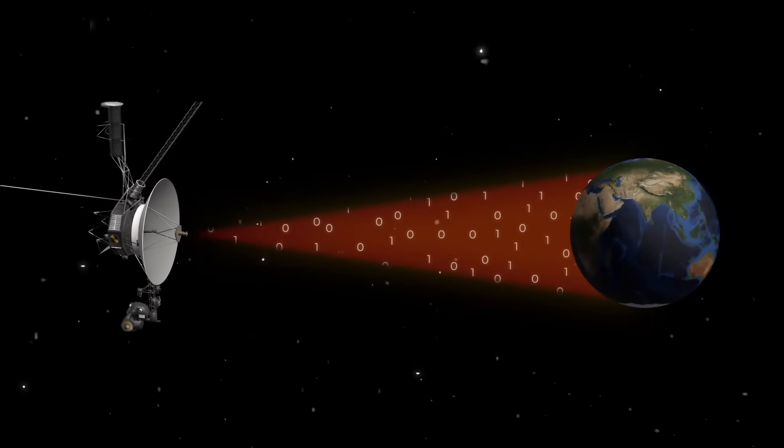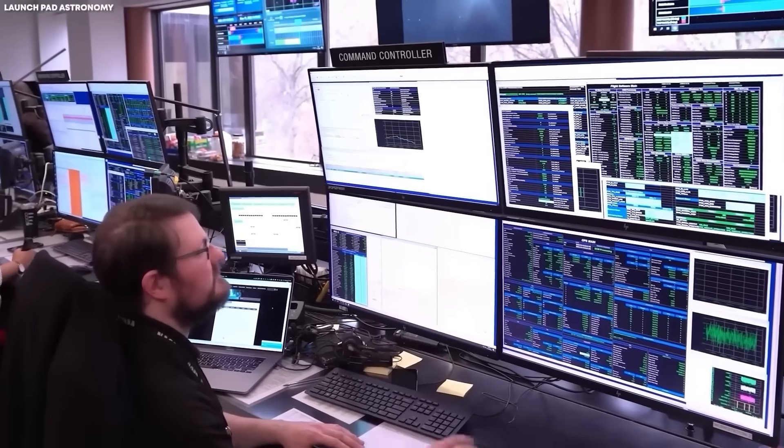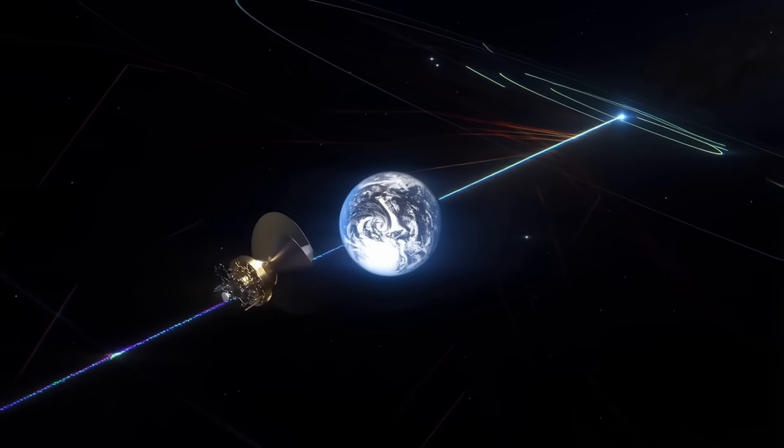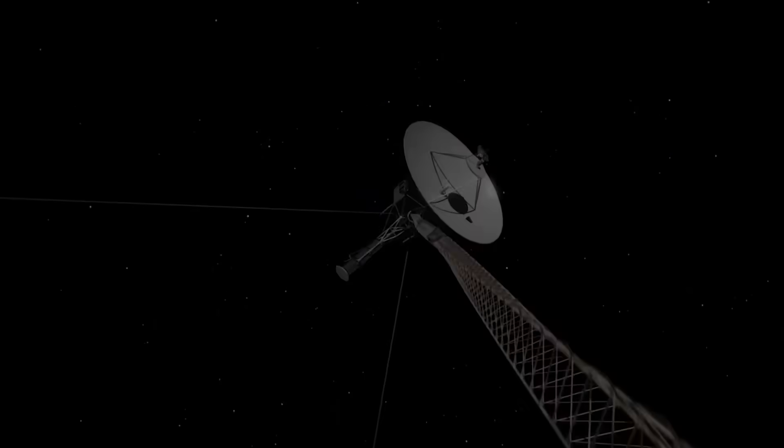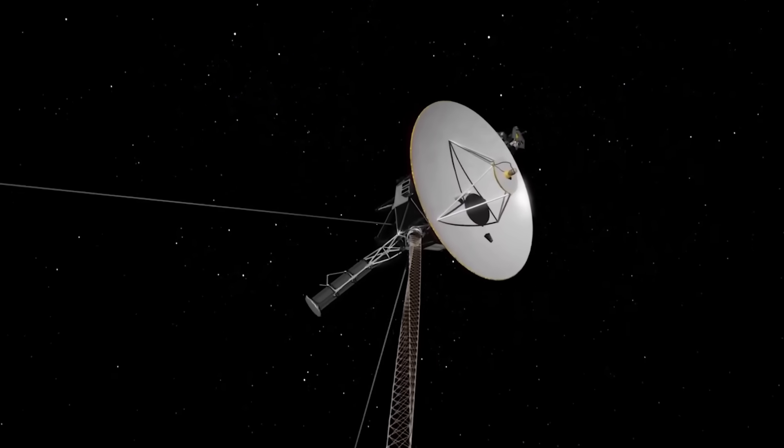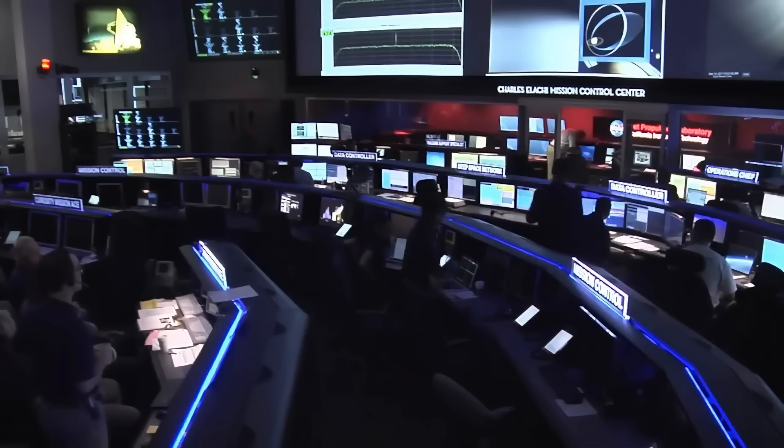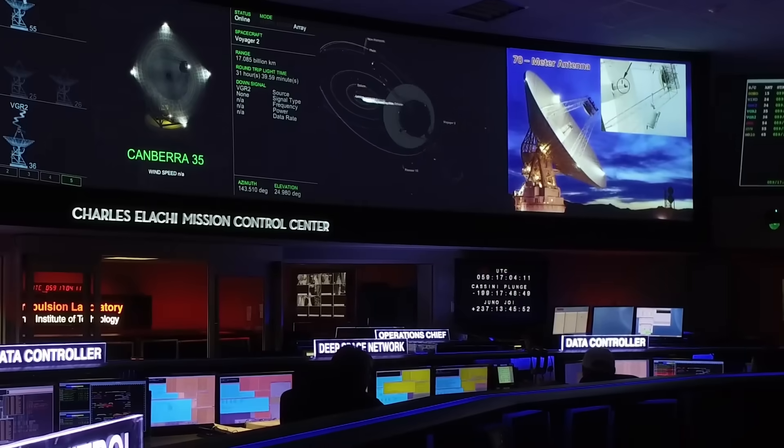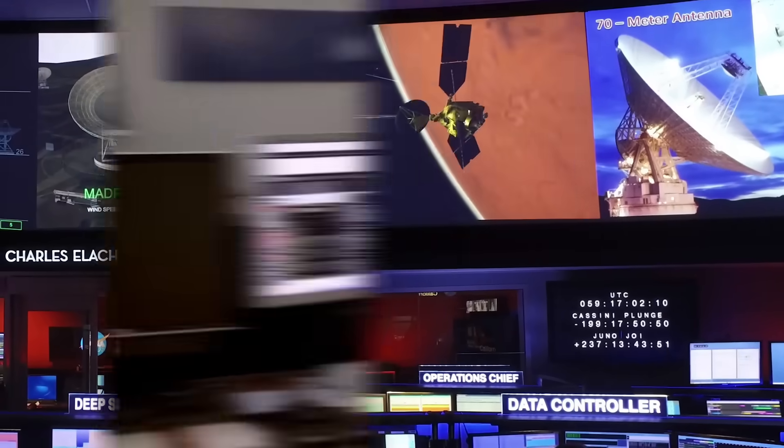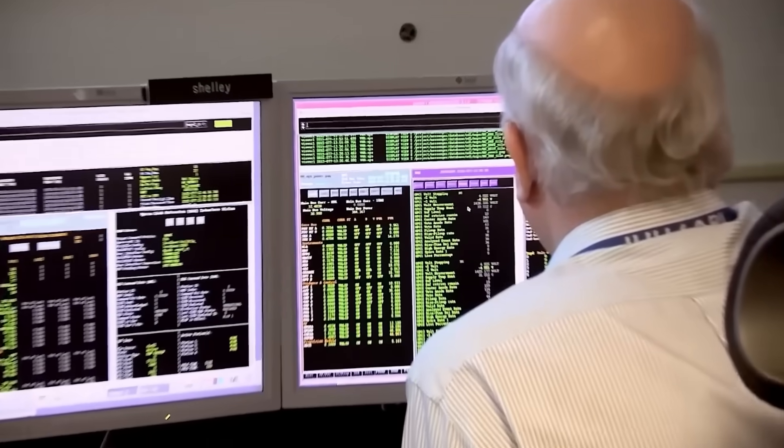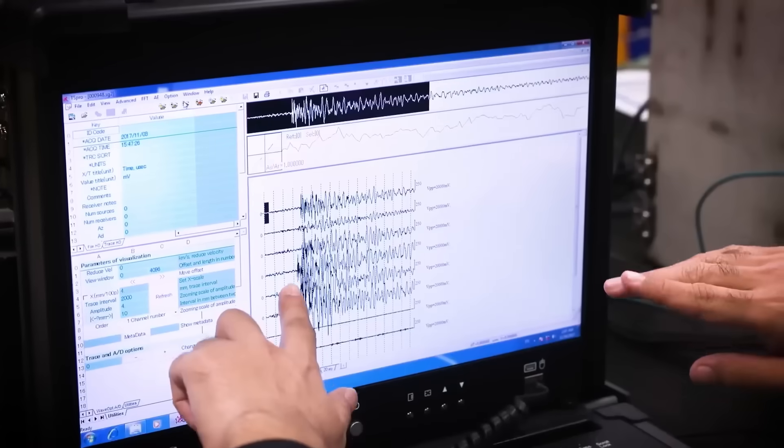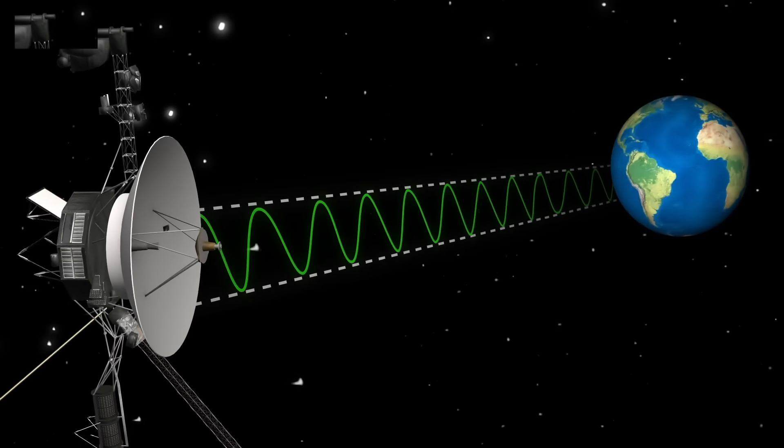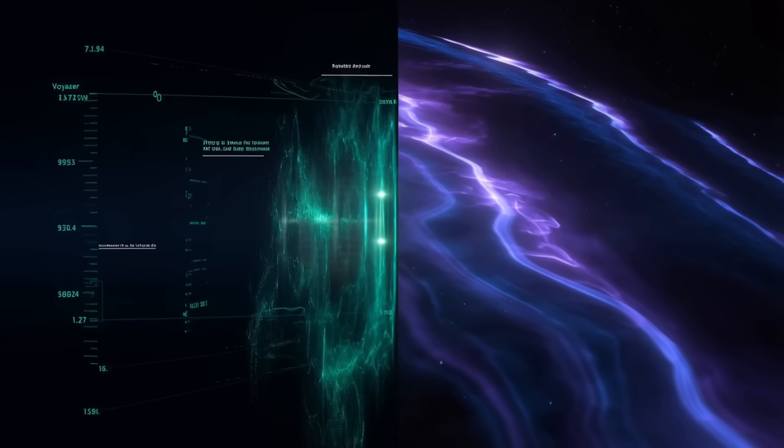The beauty of Voyager's story lies in this uncertainty. Even as it approaches its final silence, this distant explorer forces us to confront the vast unknown surrounding our tiny solar system. Each unexplained data point becomes a doorway to possibility, a chance to wonder what might exist beyond our current understanding. Voyager 1 is humanity's furthest messenger. And whether the anomaly is noise or a hidden message, it forces us to ask, what else waits out there in the dark?